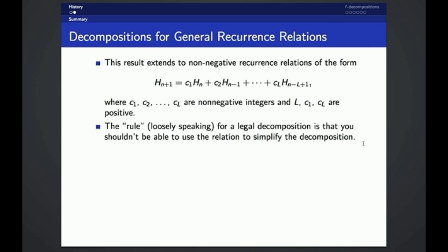Now for the Zeckendorf decomposition, we had a rule which was that no two terms could be consecutive in our decomposition. And the rule for a general recurrence relation of this form is more or less that you shouldn't be able to use the relation to simplify the way you've written down the decomposition. And if you use this rule, then every natural number has a unique legal decomposition.